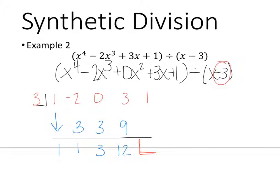And lastly, 3 times 12 is 36. So my remainder is 37. So again, I have my remainder, my constant, and then this is x, x squared, and x to the 3rd.